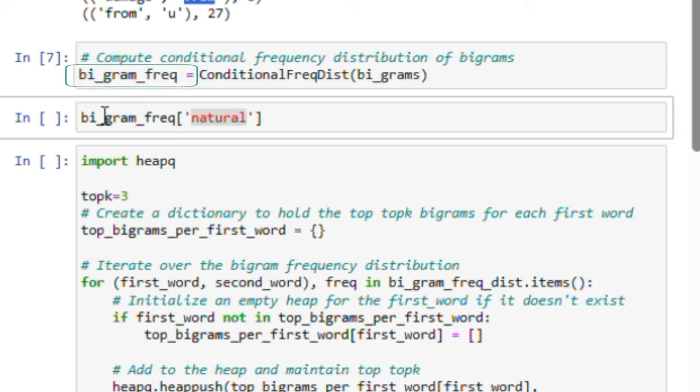So, this variable, bi_gram_freq, contains a dictionary against each word X, where the dictionary holds the second word of the bigram, whose first word is X. The value field of the second word is the frequency of the bigram.